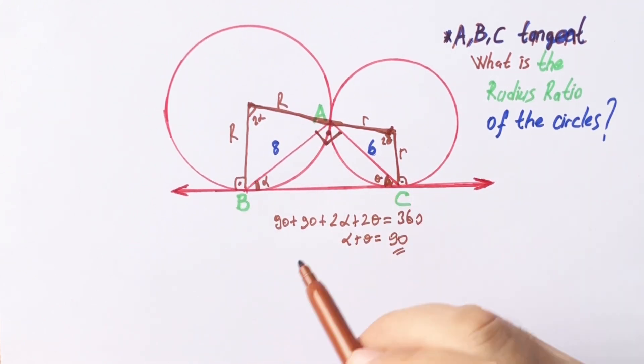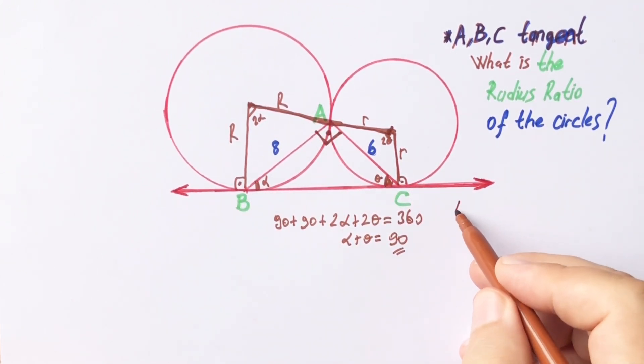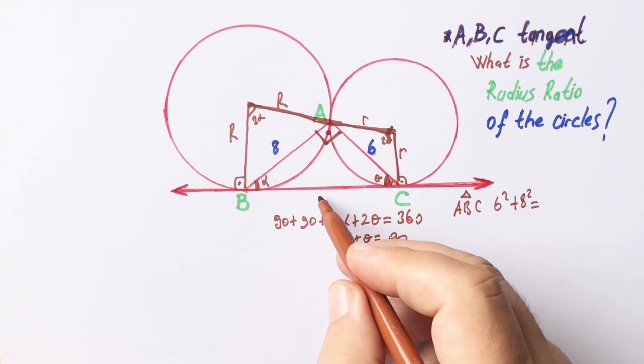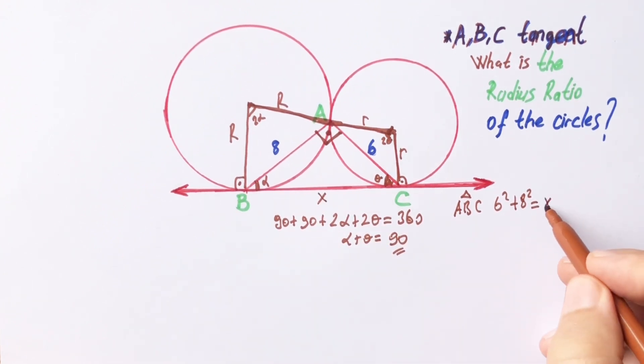If we apply Pythagorean theorem in triangle ABC, 6 squared plus 8 squared equal, let's call the hypotenuse X, X is going to be 10 units.